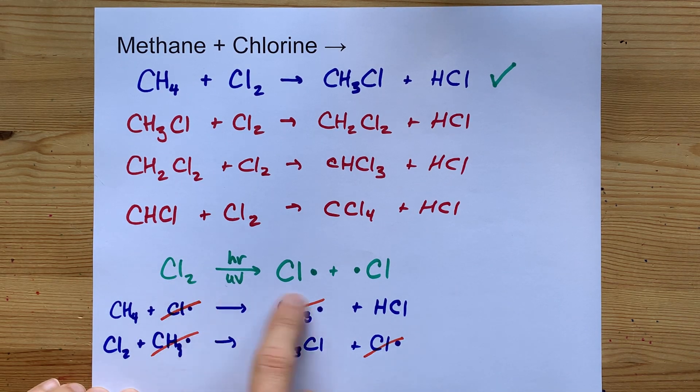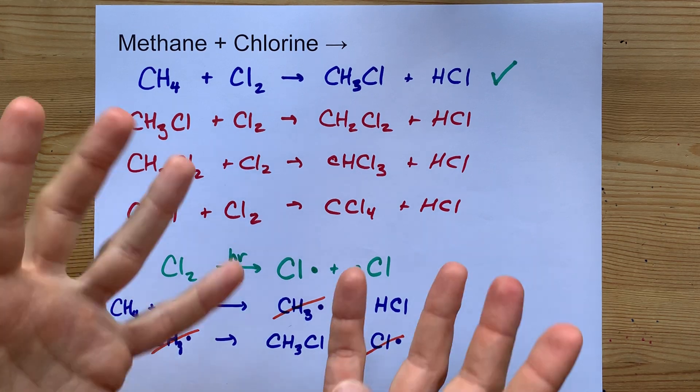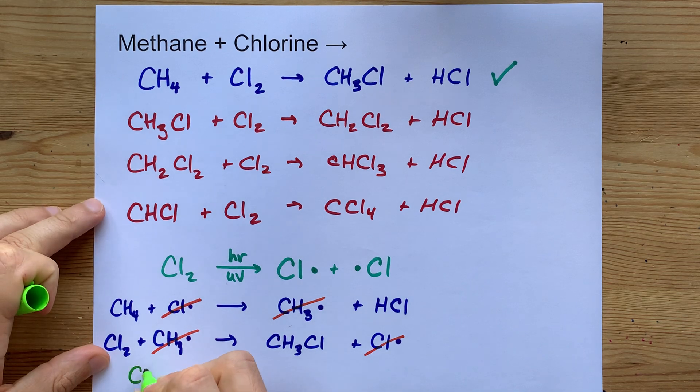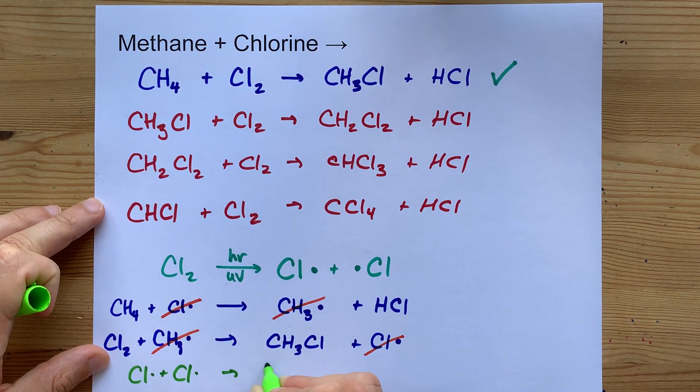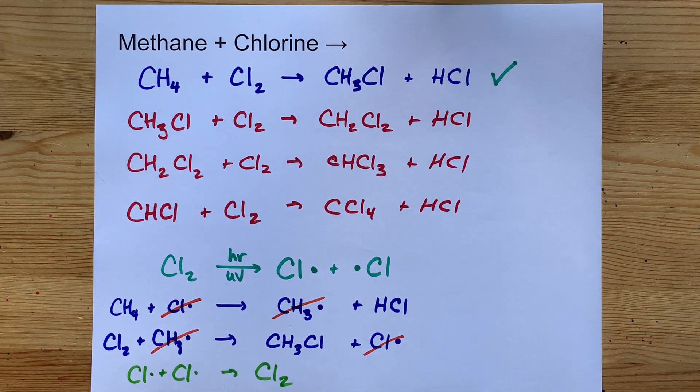This whole chain of events is not going to stop until the radicals react with each other. Perhaps you have two Cl radicals that happen to collide with each other. They will react to form chlorine gas again. That's the end of that.